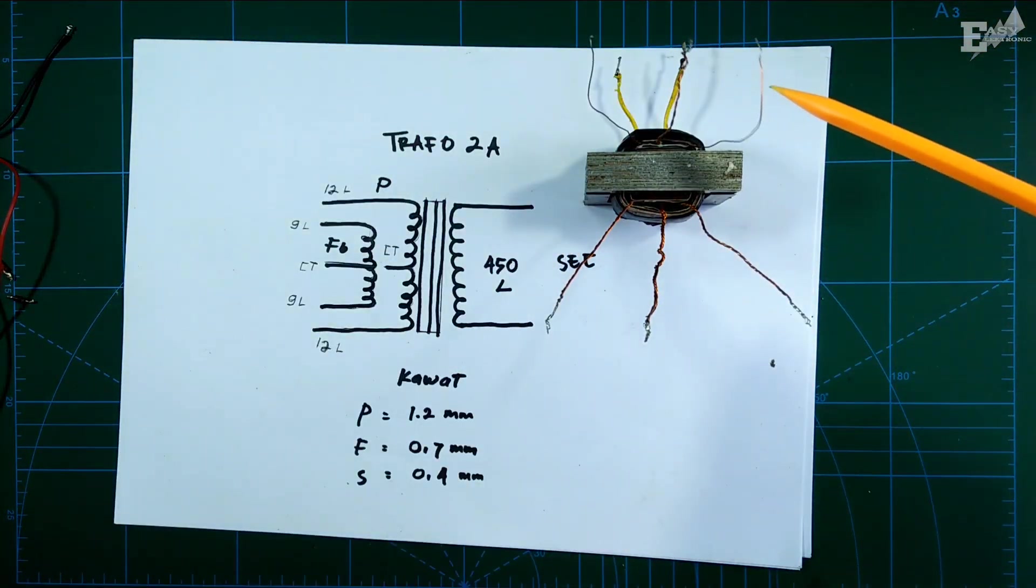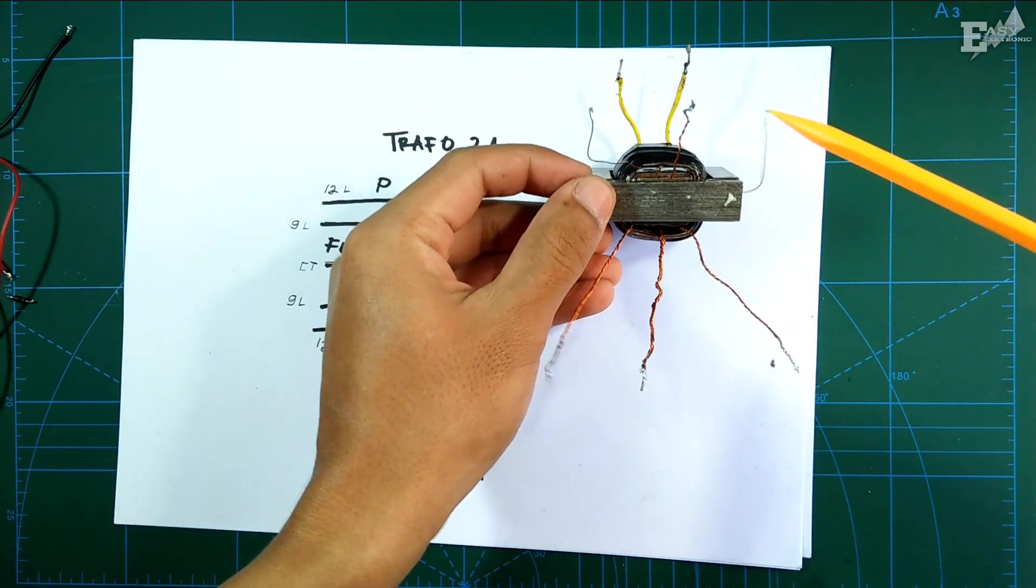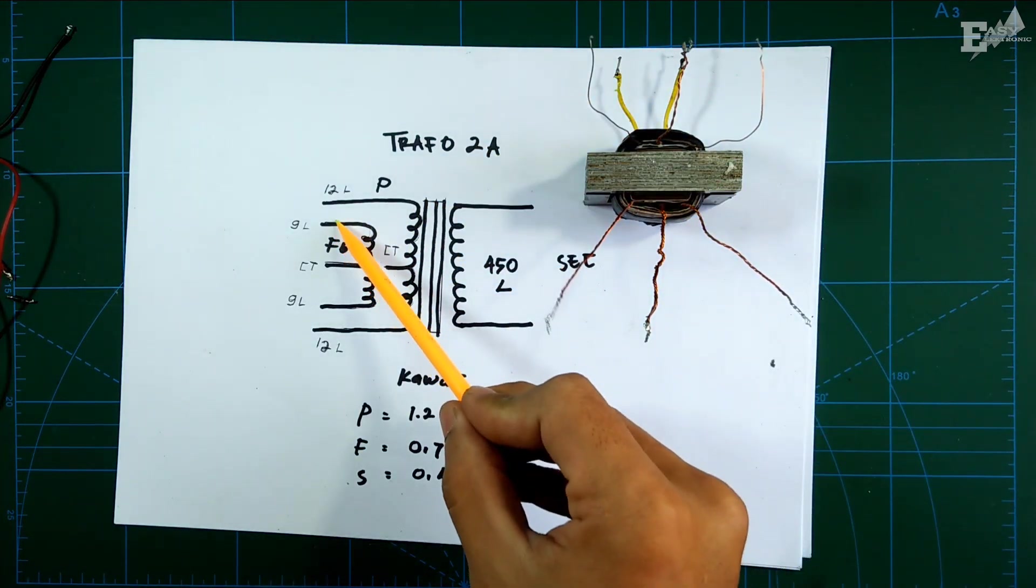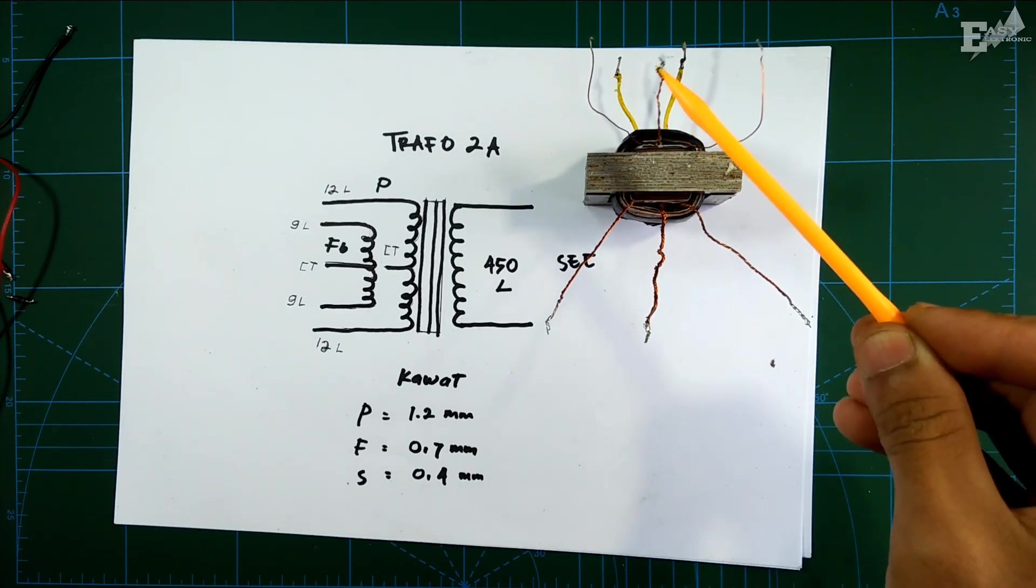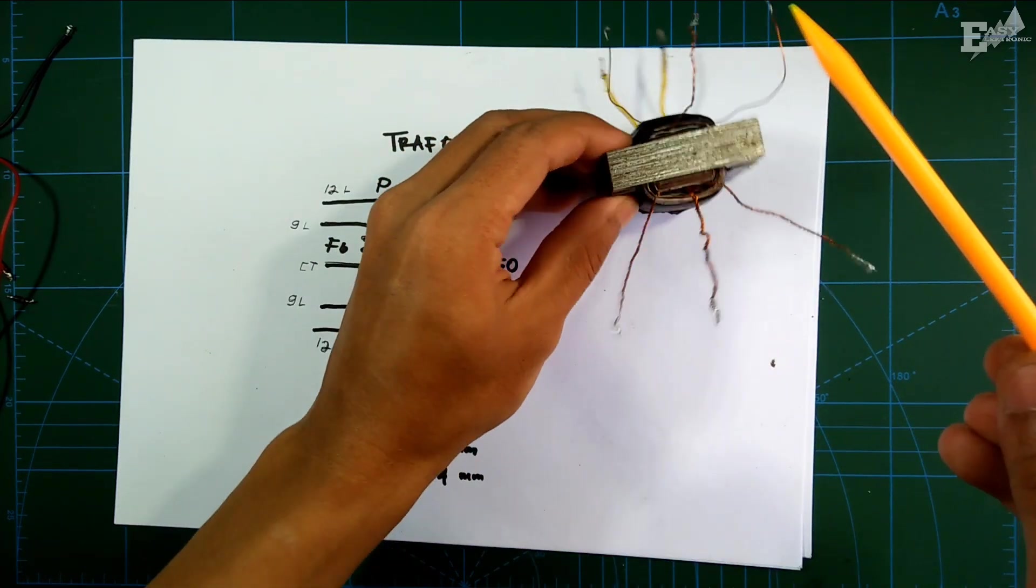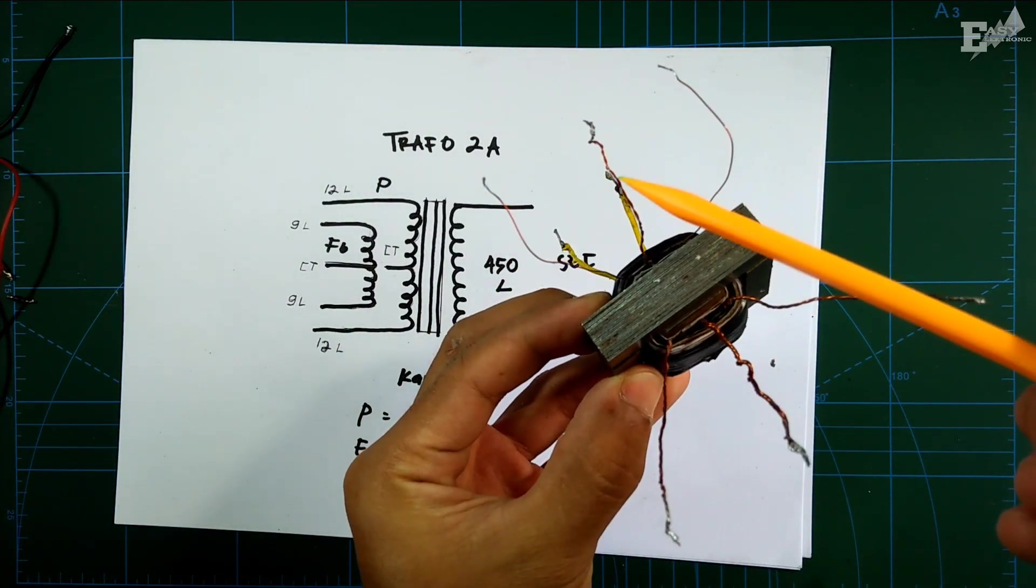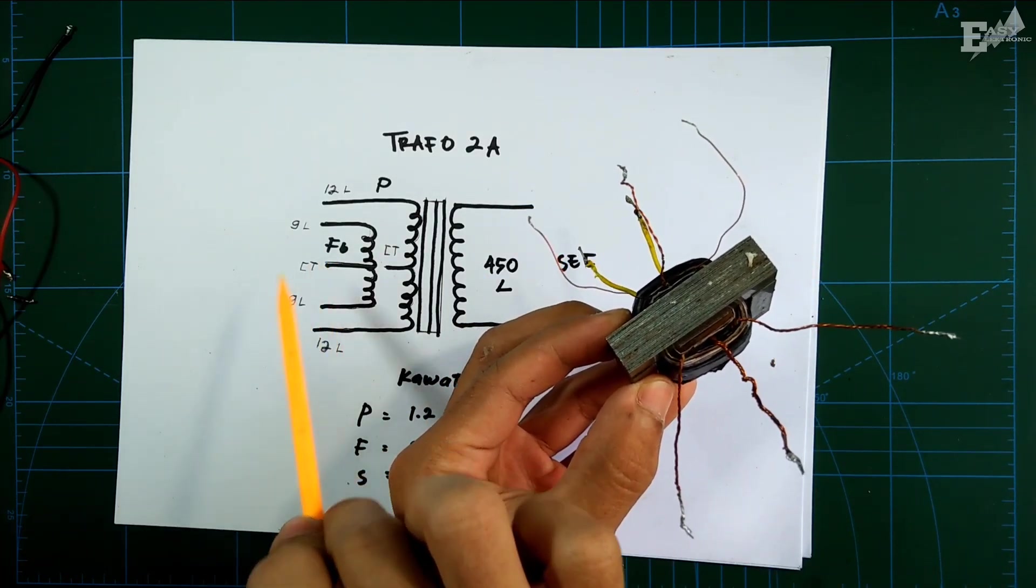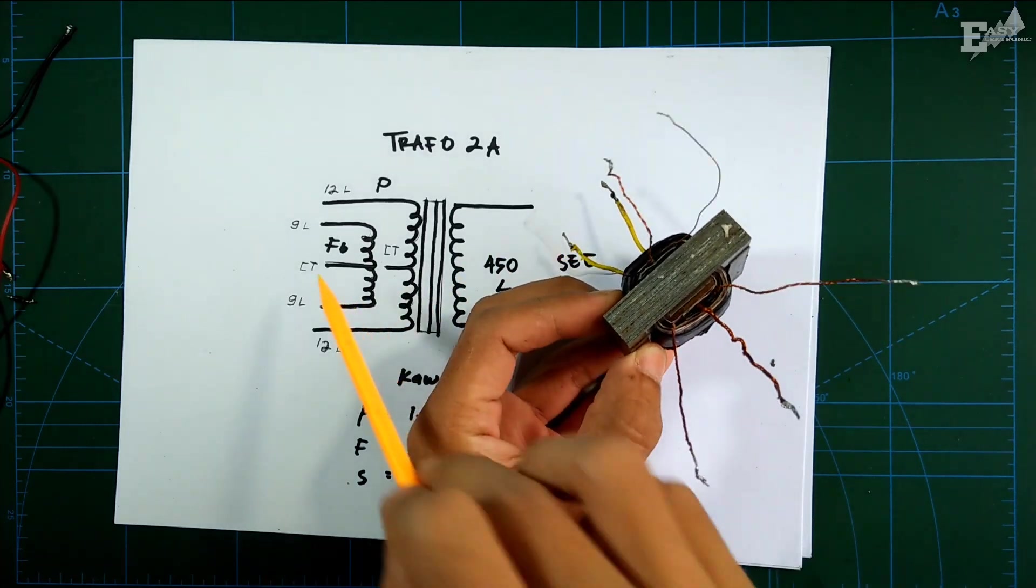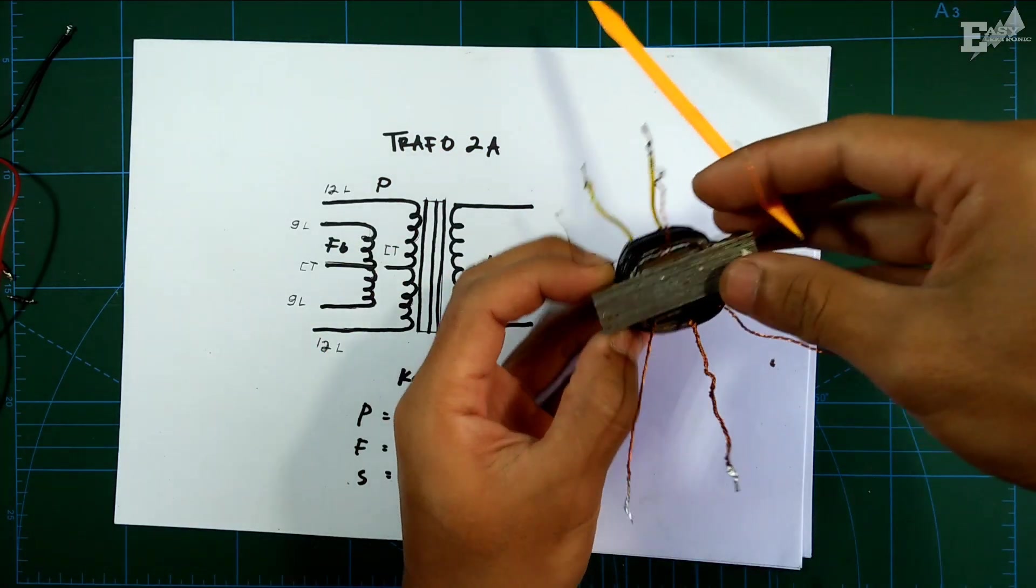For feedback I'm using 0.7mm wire, 9 turns. Then this middle one is the CT. This is not visible, here it is. This is CT, feedback CT. And this is the end of feedback, 9 turns.